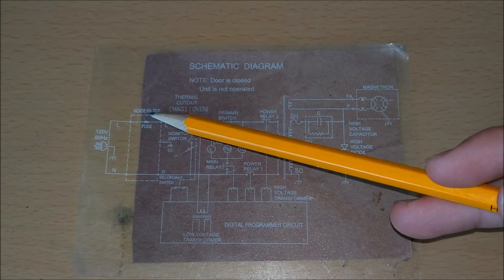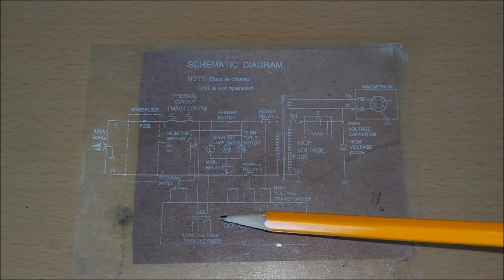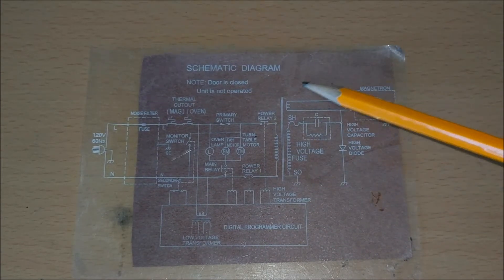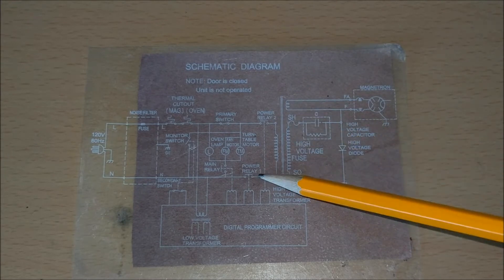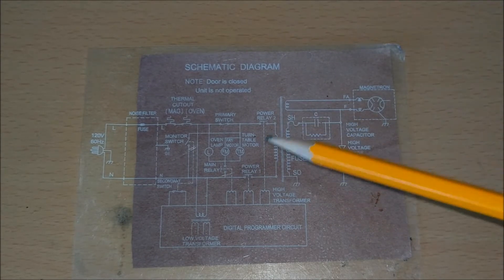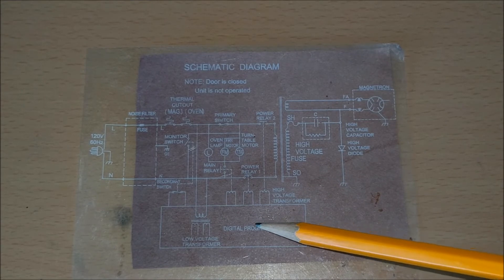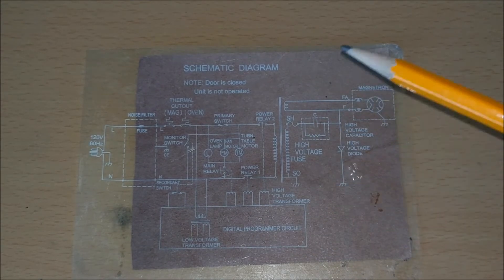And then of course we have a fuse, and then we have the logic controller board, and all that does is turn on a relay, and it turns on the actual microwave circuit, which is right here. As you can see we have the two relays just for safety precautions. Now the programmer circuit right here is just a timer that you set that turns on and off the microwave circuit.